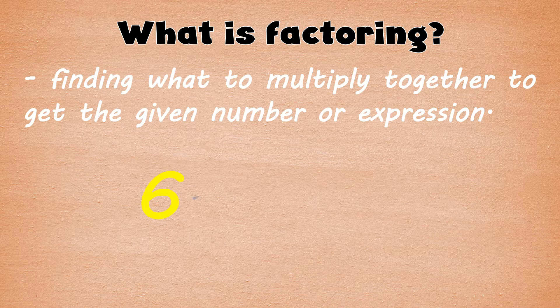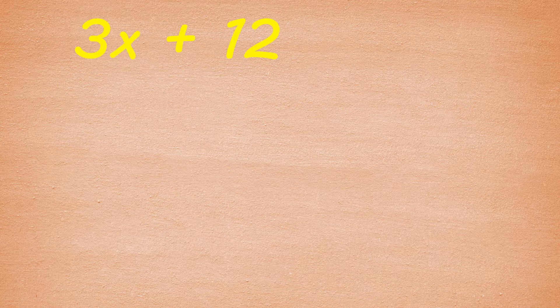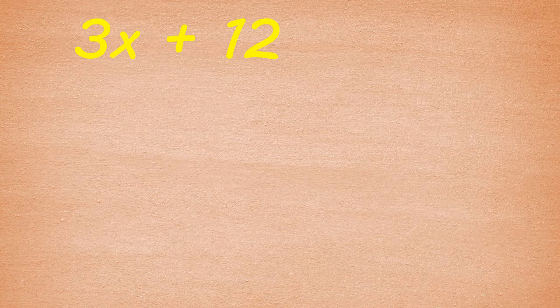Factors of 6 are 6 and 1, and 3 and 2. In factoring a polynomial, for example 3x plus 12, we identify the factors of each term and get their common factor.